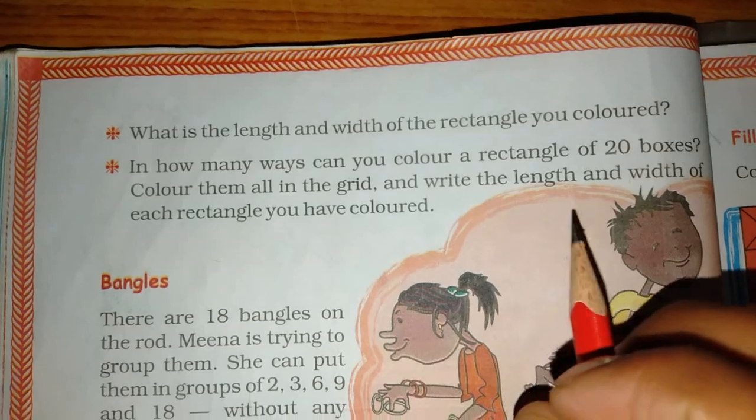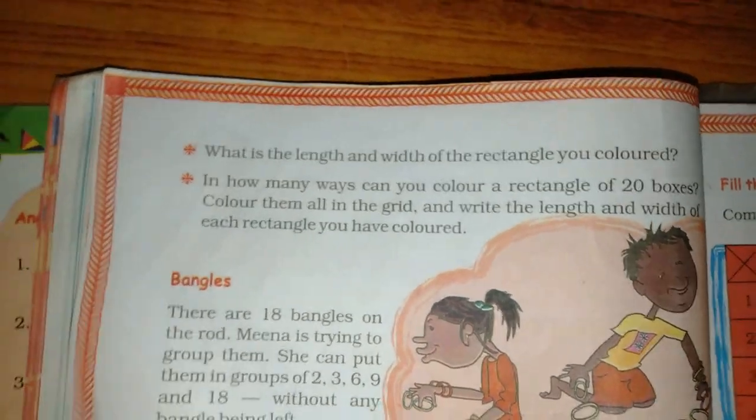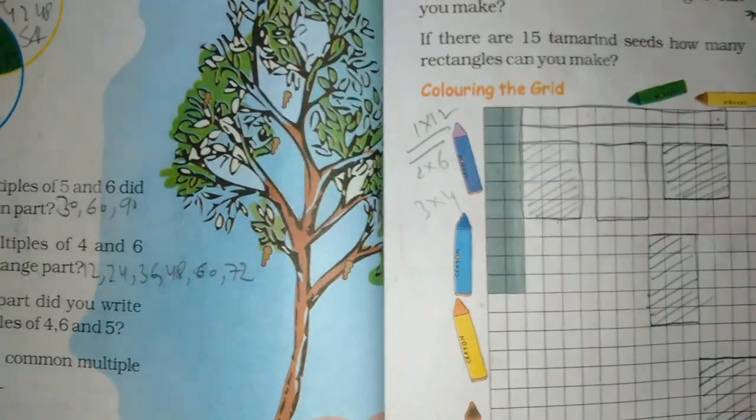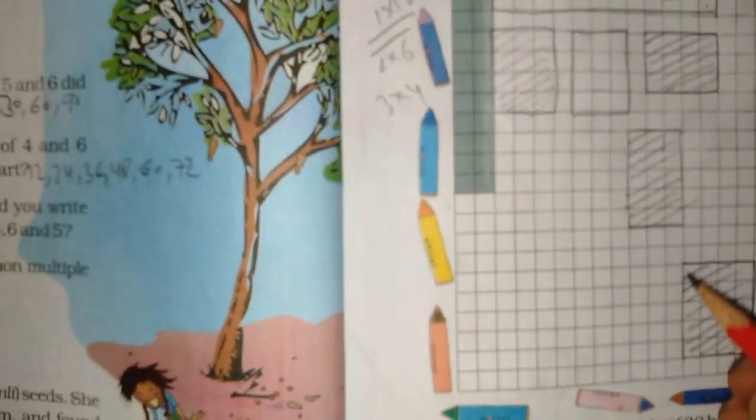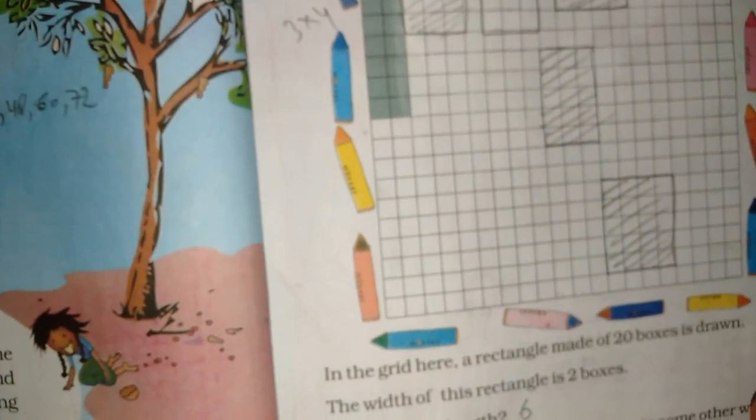Is it clear? Yes, sir. What is the length and width of the rectangle you colored? What is the length and width of the rectangle? What length is the length? How many are we? 5.